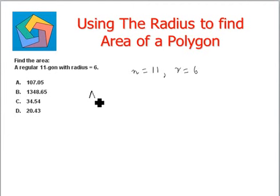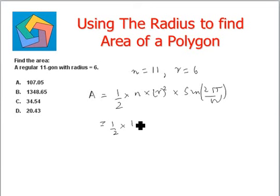By now, we know the formula very clearly: half times n times r squared times sine of 2 pi divided by n. Let's plug in the values.